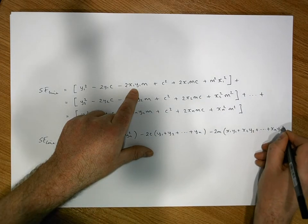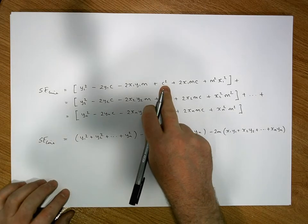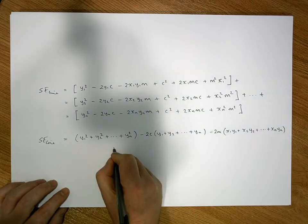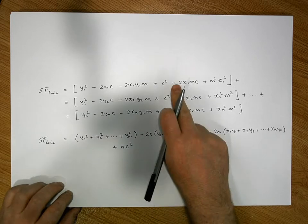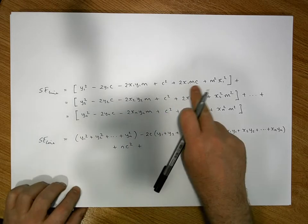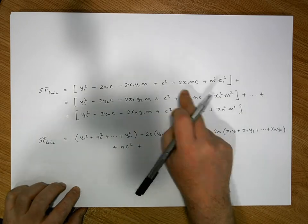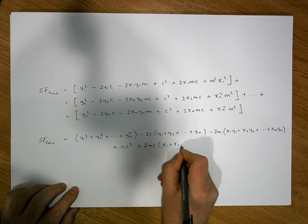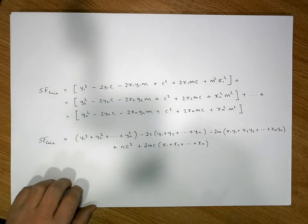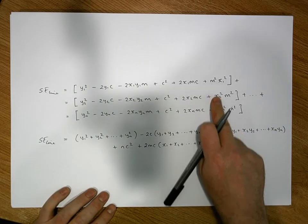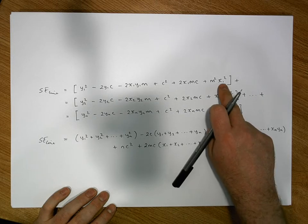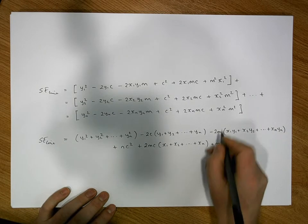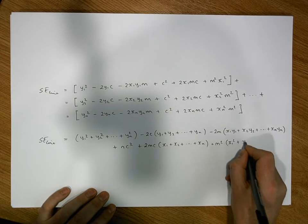There are n of those c squared terms, so this becomes plus nc squared. Then what's common across the next group is 2mc, so it's plus 2mc times x1 plus x2 plus all the way to xn. Finally, m squared is common throughout, giving plus m squared times x1 squared plus x2 squared plus xn squared.